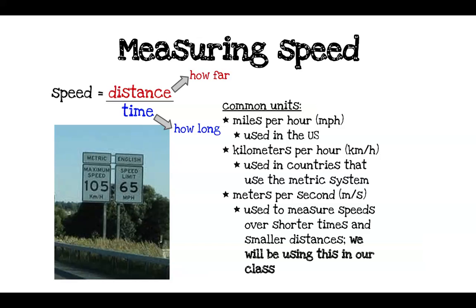Some common units for measuring speed are miles per hour, abbreviated MPH, which is used in the United States. That is the English or customary form of measurement for speed — just like feet, miles, and yards are part of the customary system, miles per hour is also part of the customary system.